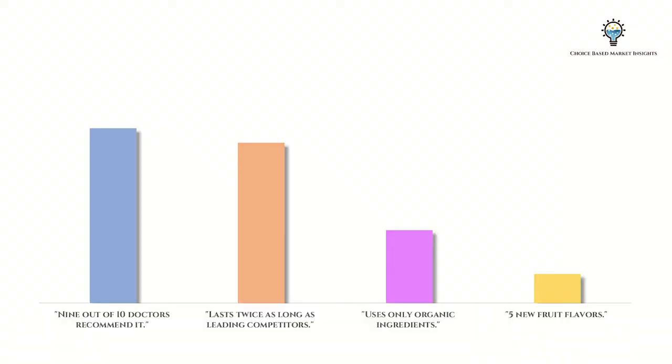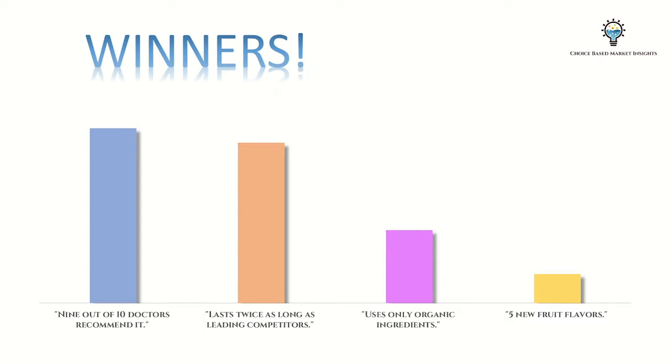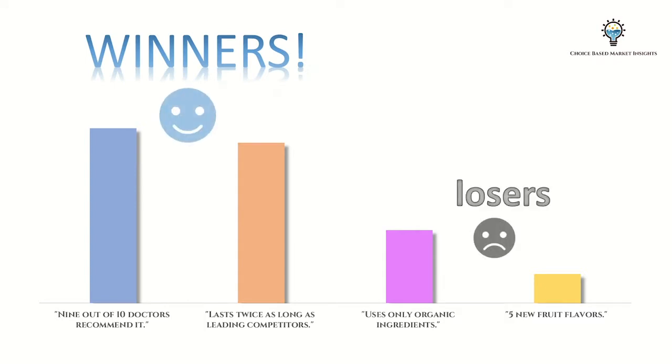As an example, let's assume a marketing agency is trying to decide the most appealing messages among four slogans for a healthcare product: available in five new fruit flavors, lasts twice as long as leading competitors, uses organic ingredients, and nine out of ten doctors recommend it. A max diff may say that 'nine out of ten doctors recommend it' and 'lasts twice as long as leading competitors' are the most appealing messages.